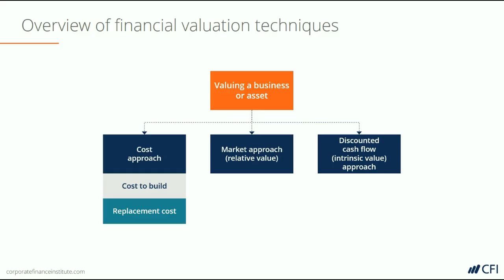The market approach is a form of relative valuation. With this approach, we look at what other companies or assets are worth and use them as a proxy for what we're trying to value. The first method is to look at comparable companies that are publicly traded — they're easy to find because their shares trade on exchange, so you can view their price at any time and determine what other investors are willing to pay. Then we can use ratios to figure out what the company we're trying to value is worth based on its revenue, EBITDA, earnings, or some similar metric.